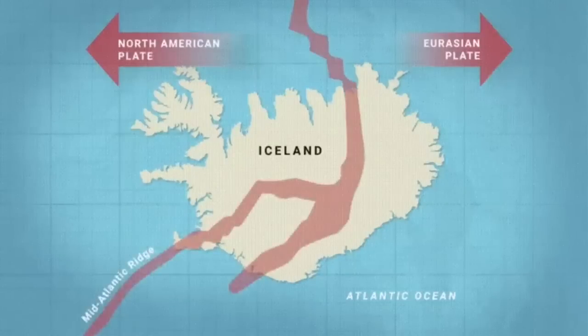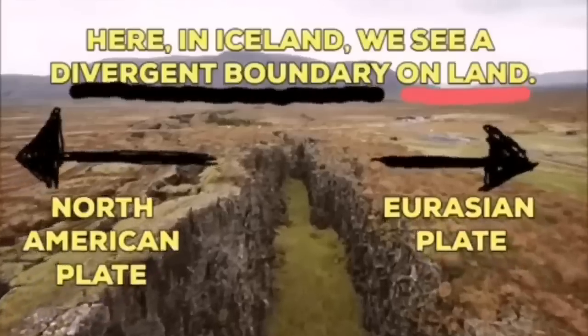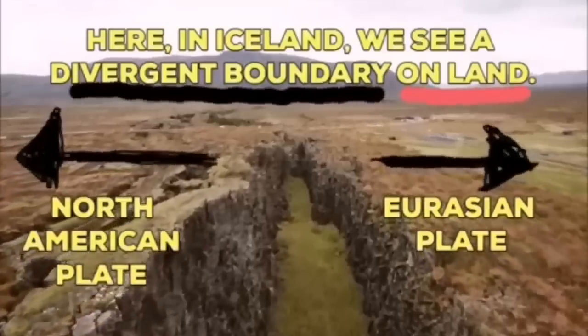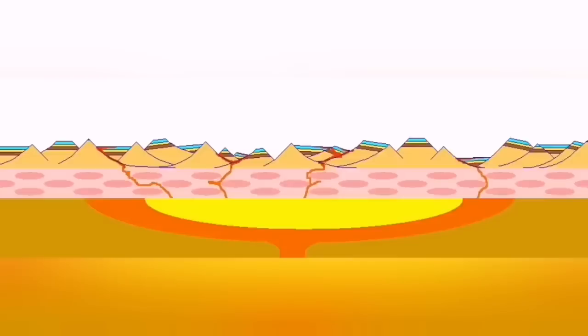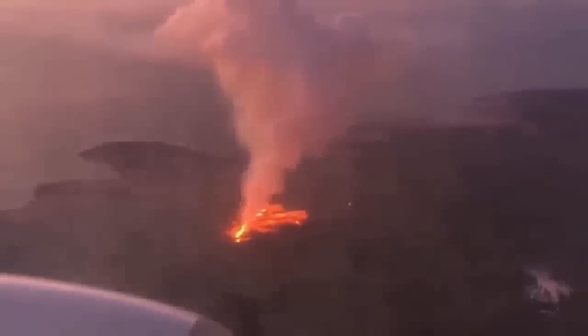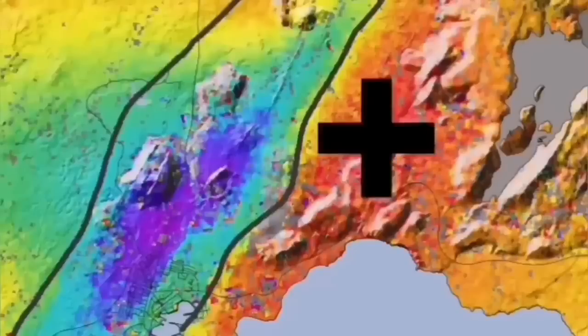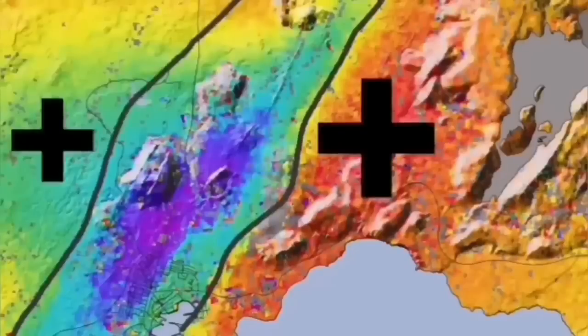Such a thing happens in Iceland, on the land, we can see it. Eurasian plate and North American plate, through these grabens, this is the hollow that you see in the middle, are separating. And through them, the magma forms and rises and creates lava, eruption of the volcano, this is what we call it.